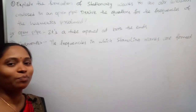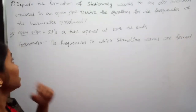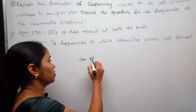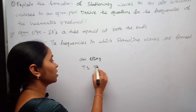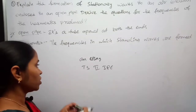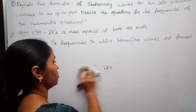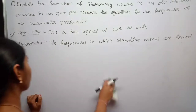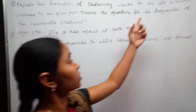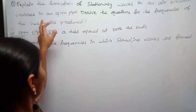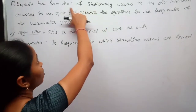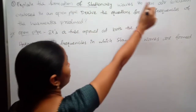Hello students, welcome to Swapna Physics Classes. In this lecture I am going to explain an essay question for your TS Inter Second Year IPE Physics examination. This essay question is from the waves chapter. The question is: explain the formation of the stationary waves in an air column enclosed in an open pipe.